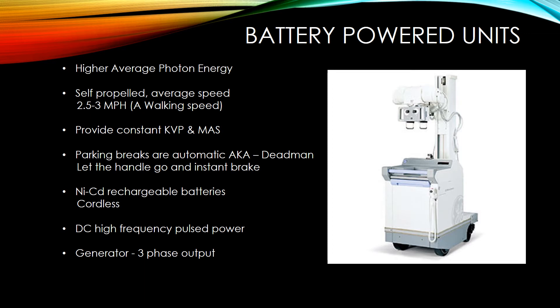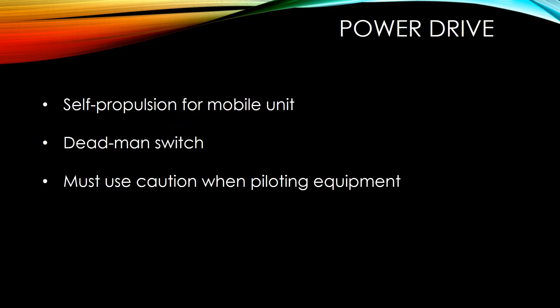Battery-powered units have higher than average photon energy and are self-propelled at the average walking speed of 2.5 to 3 miles per hour, providing constant kVp and mAs. They have automatic parking brakes, also known as dead man brakes — you let go and it's an instant stop. They use rechargeable batteries, DC high frequency pulse power, and a generator with three-phase output. The power drive is a self-propulsion unit with a dead man switch, and you must use caution when piloting.